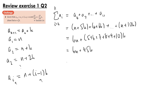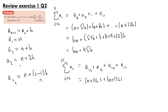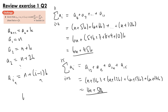Doing the same for the sum from i equals 12 to 15 of a(i), we have a12 plus a13 plus a14 plus a15, equal to (n plus 11k) plus (n plus 12k) plus (n plus 13k) plus (n plus 14k). That gives 4 lots of n plus (11 plus 12 plus 13 plus 14) lots of k, which is 50k, giving 4n plus 50k. Setting 6n plus 45k equal to 4n plus 50k, we get 2n equals 5k, therefore n equals 5 over 2k, as required.